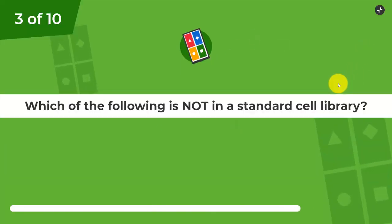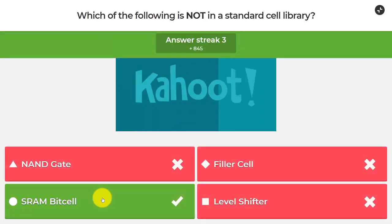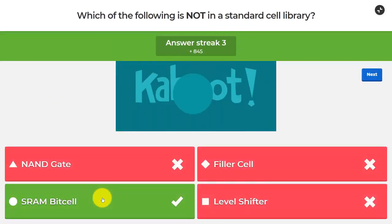Which of the following is not in the standard cell library? An NAND gate, a filler cell, an SRAM bit cell, or a level shifter? Well a NAND gate for sure is. Filler cells, we discussed that there are kinds of physical cells inside the library and level shifter that's a low power type. SRAM bit cell, SRAM that comes from a vendor, it's not part of the standard cell and I got that one right too.